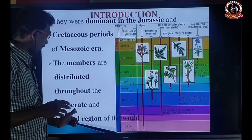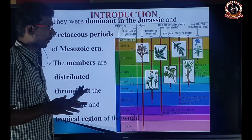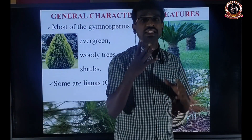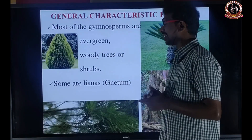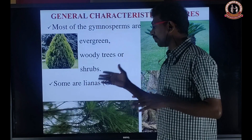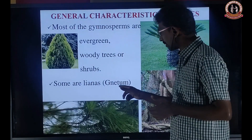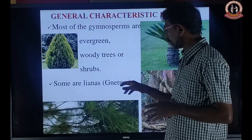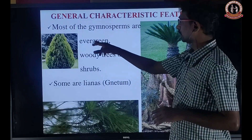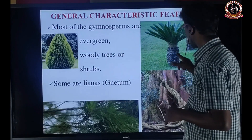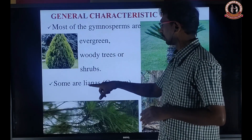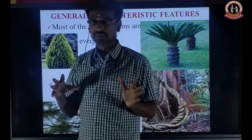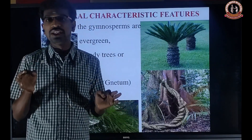The members are distributed throughout the temperate and the tropic region of the world. Most of the gymnosperms are evergreen because they have needle-like leaves, and they are woody trees. Sometimes it may be a liane. Especially for Gnetum. The Gnetum plant has most characters that resemble an angiosperm — it is a very advanced form of gymnosperm. So it may be evergreen, with totally green leaves, and woody — that is a woody tree. It may be a tree or it may be a liane, which is like a climber but has a woody stem.